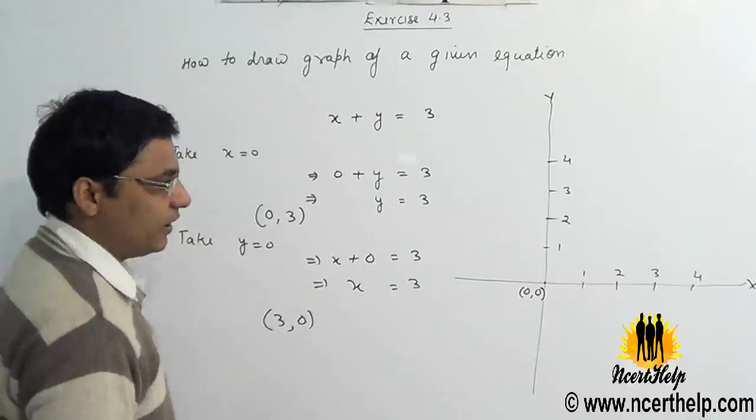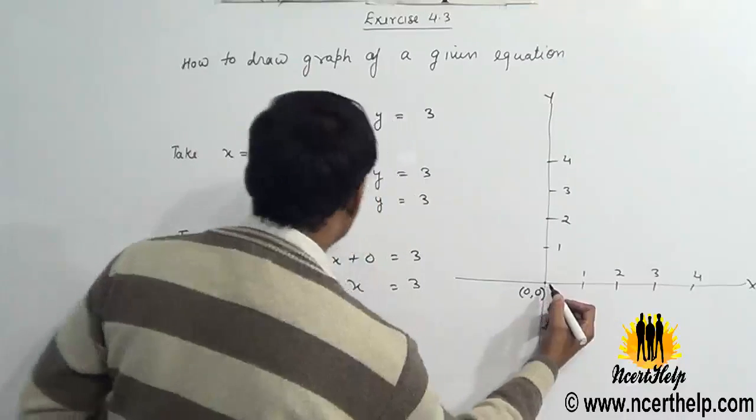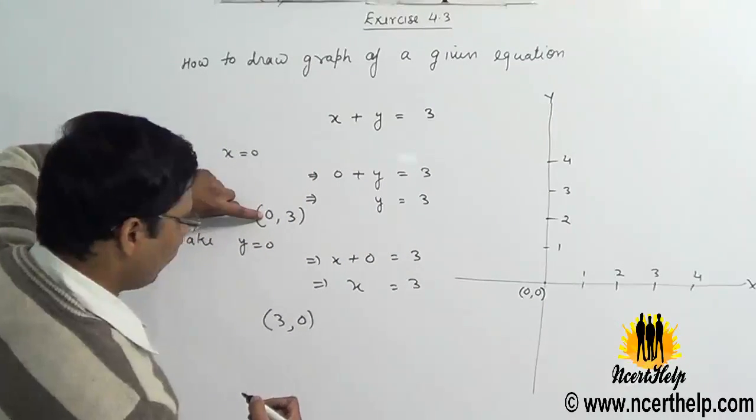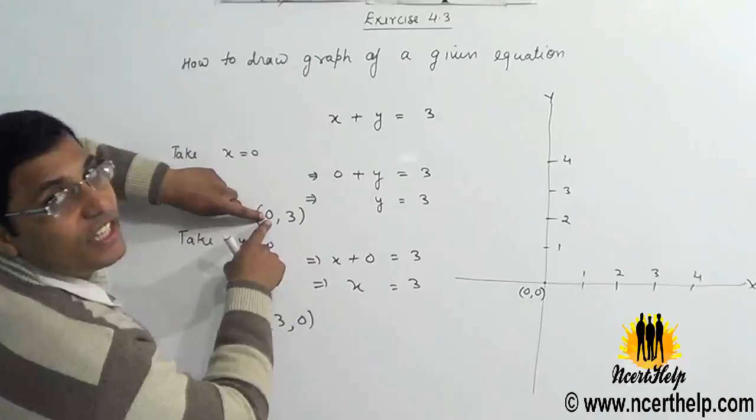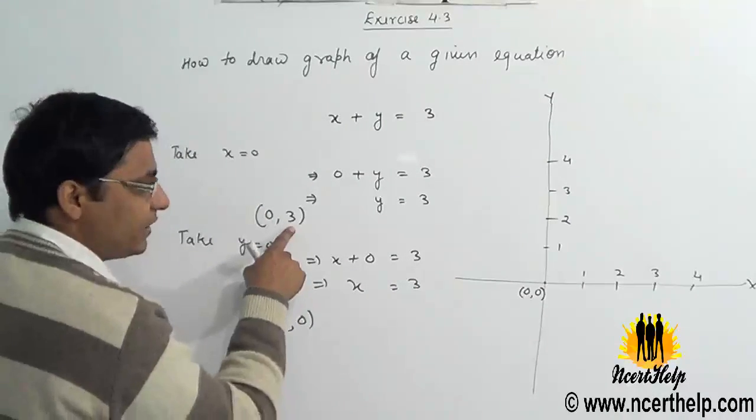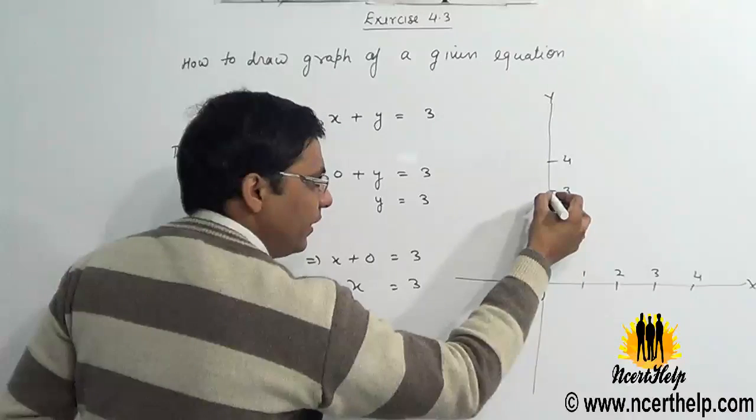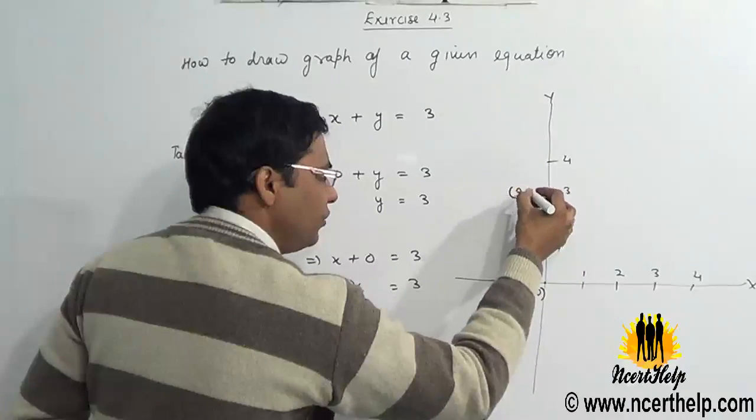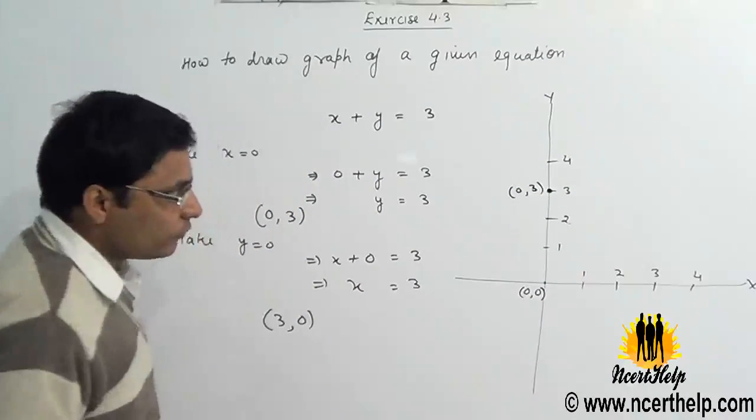0 comma 3, so move three units. There is no need to move on the x-axis because x equals 0 here and y is 3. So move 3 points on y. So this will be point 0 comma 3. No need to move on x-axis.